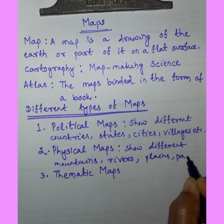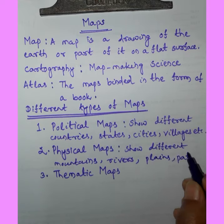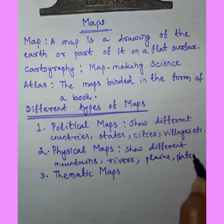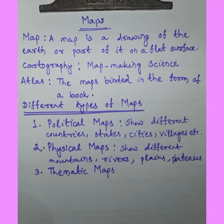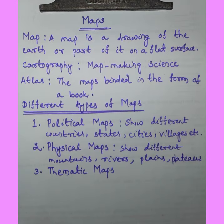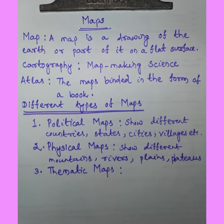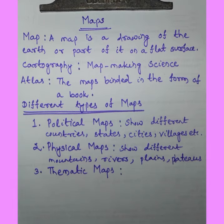Physical maps show physical features such as mountains, hills, and plateaus. Thematic maps show details of certain themes such as rainfall, forest, soil, weather, roads, and crop distributions.